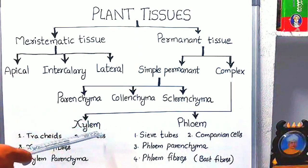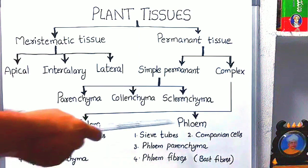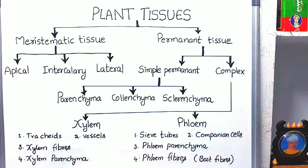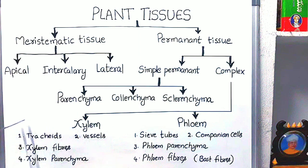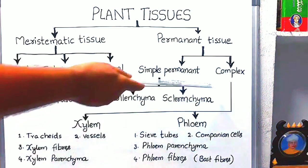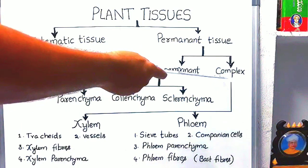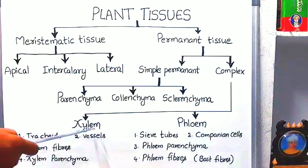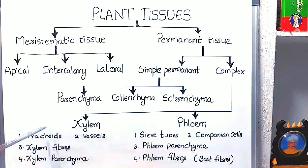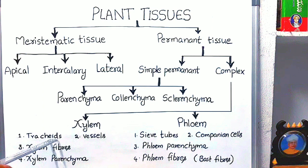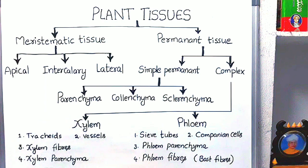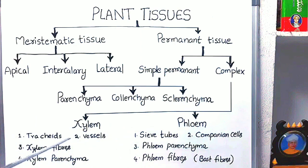Xylem and phloem are generally called vascular tissues. They are present in vascular bundles and help in the conduction of different materials. Xylem consists of four types of elements: tracheids, vessels, xylem fibers, and xylem parenchyma. The main function of xylem is to conduct water and minerals.